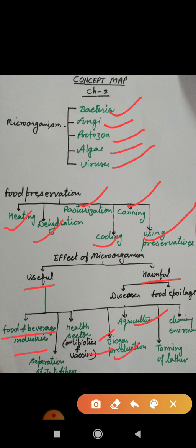The next is biogas production. In biogas production, microorganisms convert biomass into a gaseous fuel form, which is called biogas and is used as fuel.